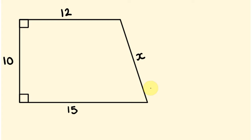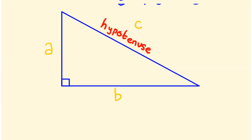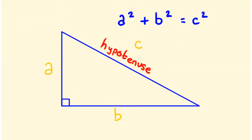G'day, welcome to the Tech Math channel. In this video we're going to be using Pythagoras' theorem, which states that if you square the two shorter sides of a right angle triangle and add them together, it's equal to the square of the hypotenuse — the long side. We've been using this a squared plus b squared equals c squared idea in previous videos.